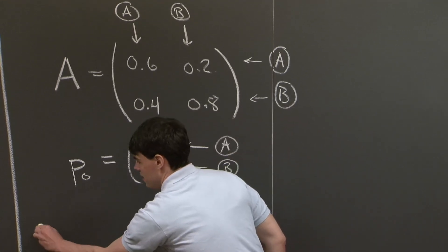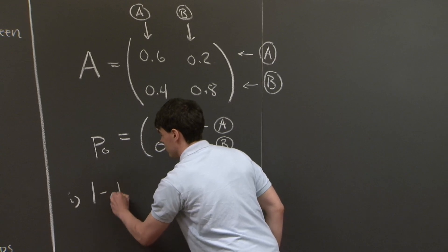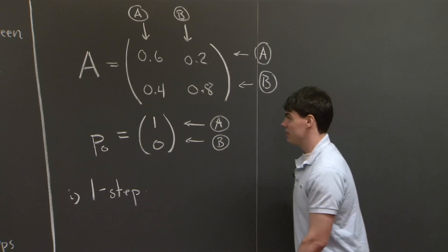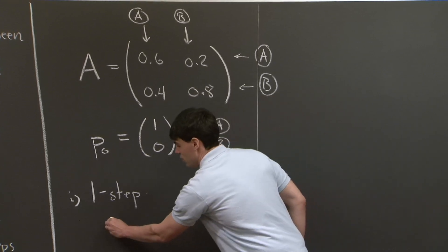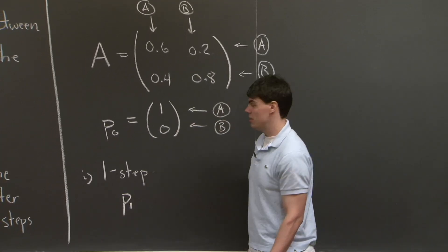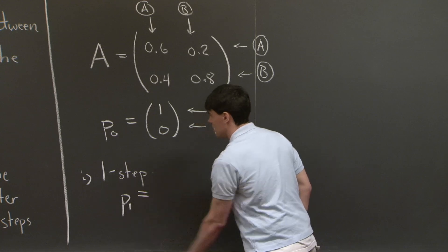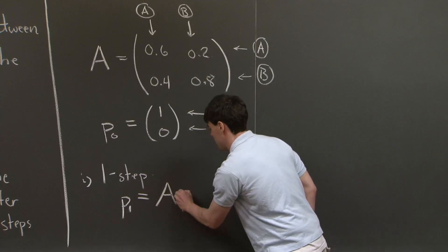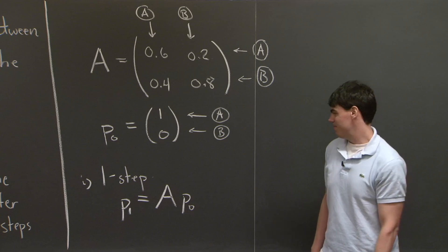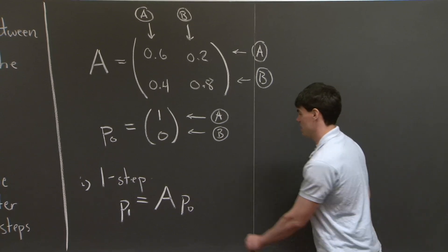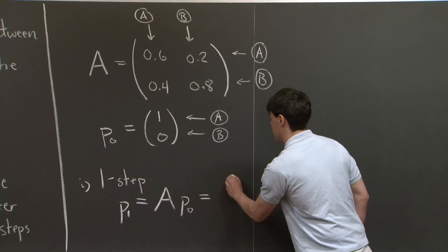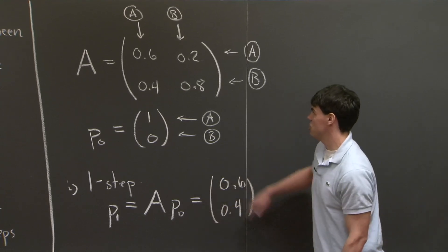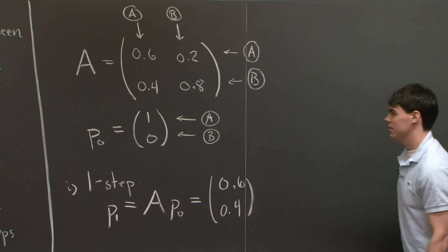So for one step, what's the probability of the particle going to be? Well, this is the beauty of introducing matrix notation. I'm going to denote p1 to be the probability of the particle after one step. And we see that we can write this as the matrix A multiplied by p0, like this. So the answer is 0.6 and 0.4. And I achieve this just by multiplying this matrix by this vector. OK, so this concludes part one.